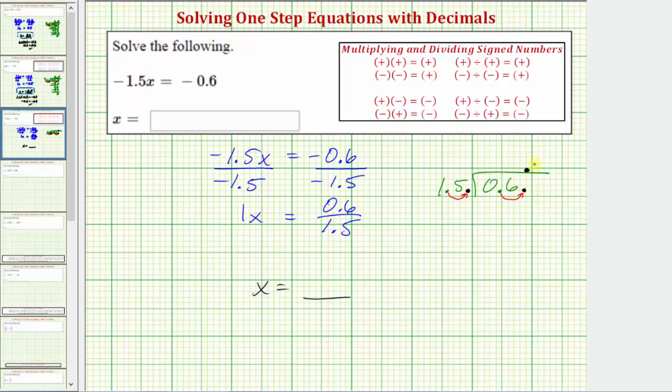So we first need to determine how many 15s there are in six. Well, there are zero 15s in six. Zero times 15 is zero, and we subtract. Six minus zero is six.